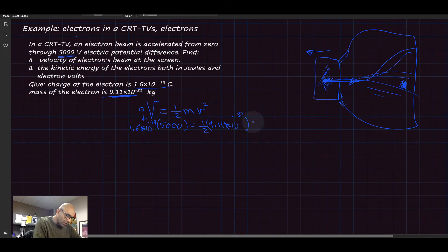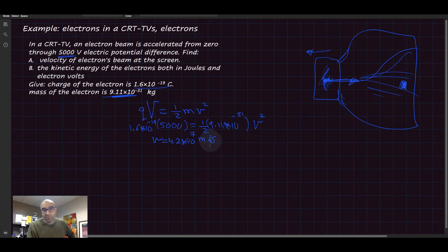The only unknown is the velocity squared, or the velocity of the electrons. After plugging in these numbers and using the calculator, you can find the velocity of the electron as it hits the screen is 4.2 times 10 to the power 7 meters per second. That's a huge velocity.